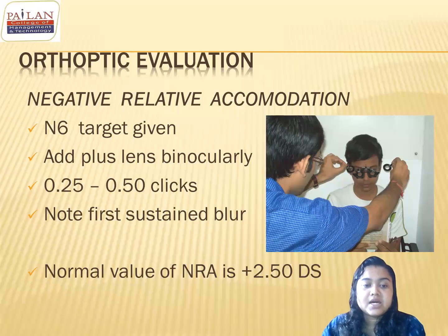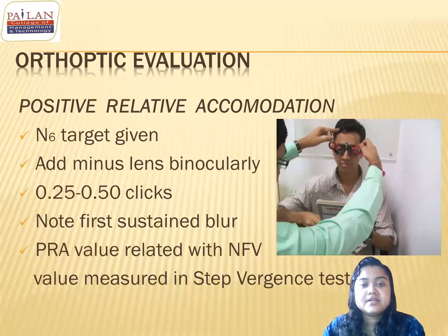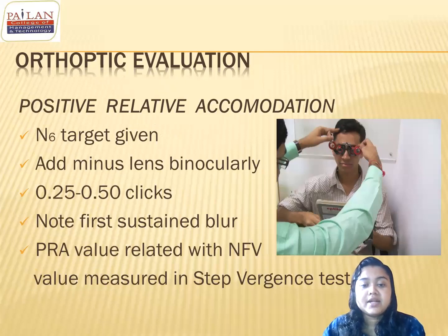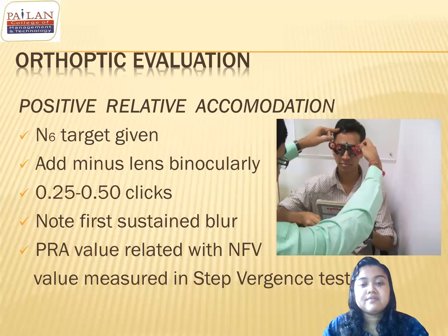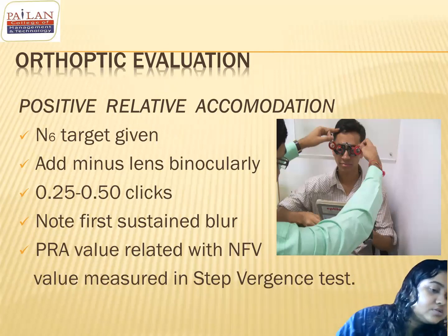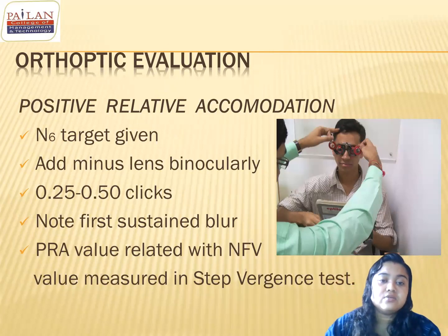By the PRA test, we are stimulating the accommodation and measuring how much accommodation can be stimulated. A normal person should have a PRA value of around -2.5 diopter.